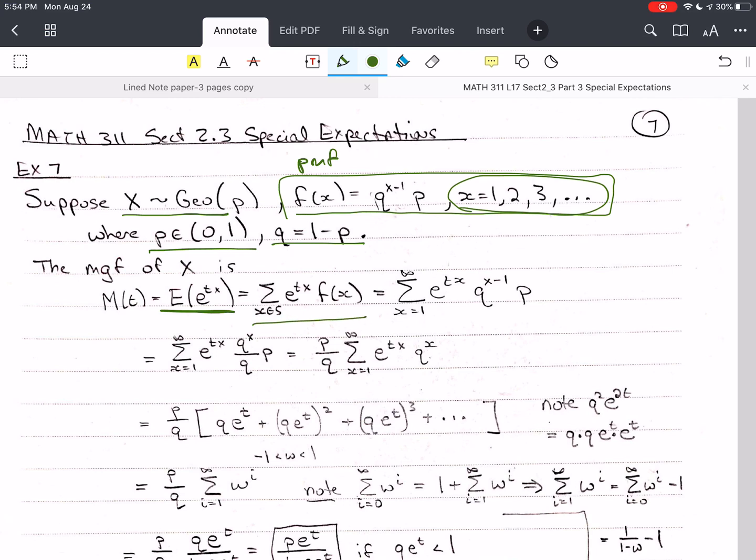f of x equals q to the x minus 1 times p. And p is not equal to 0 or 1. It's between them. It's on an open interval, not a closed interval. q is 1 minus p. The mgf of x is m of t, and it's always E of e to the tx. And so you always write this.